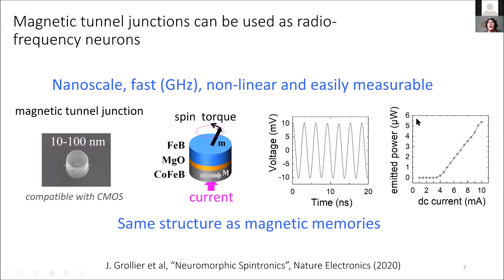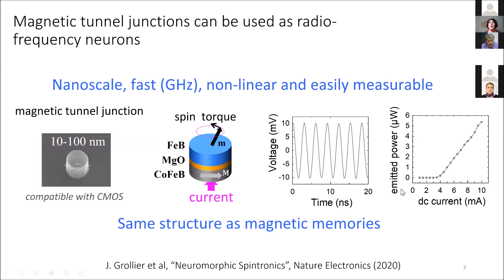You see that here the emitted power as a function of the DC current really looks like the rectified linear unit of neurons in artificial neural networks. This means that we could use the current as the input information to the neuron, use the nonlinearity of the output to imitate neurons, and then broadcast the result through the created microwaves. So here we have the possibility to create an artificial nanoneuron. The experiments are performed with devices that have a vortex configuration and a diameter of about 400 nanometers.